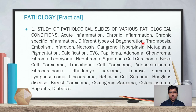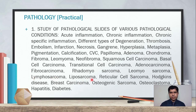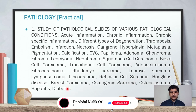The slides also cover different types of degeneration, thrombosis, embolism, infarction, necrosis, gangrene, hypoplasia, aplasia, pigmentation, calcification, CVC, papilloma, adenoma, chondroma, fibroma, leiomyoma, neurofibroma, squamous cell carcinoma, basal cell carcinoma, transitional cell carcinoma, adenocarcinoma, lymphoma, sarcoma, liposarcoma, reticular cell sarcoma, Hodgkin's disease, breast carcinoma, and osteogenic sarcoma. Bone diseases, hepatitis, and diabetes will also be discussed in the pathology practical.